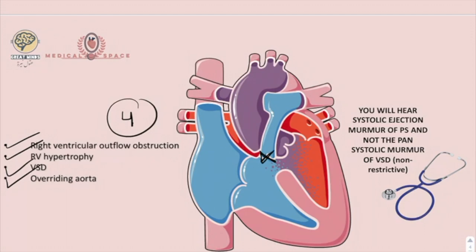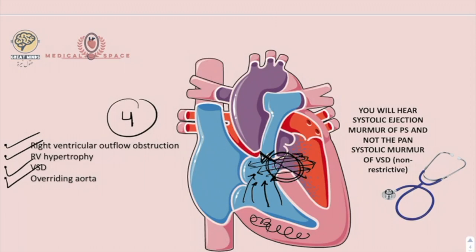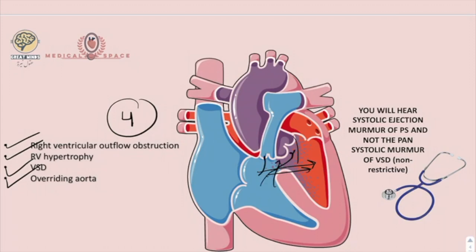There will be an obstruction of the outflow of the right ventricle, which will cause the right ventricle to increase its power to push blood through the stenotic outflow, leading to right ventricular hypertrophy. The ventricular septal defect is non-restrictive, meaning there will be no turbulence when blood goes from the right to the left ventricle, causing disappearance of the pansystolic murmur. The overriding aorta sits above both ventricles and takes blood from both. The murmur heard in Tetralogy of Fallot is a systolic ejection murmur, not a pansystolic murmur.